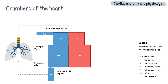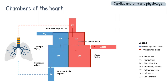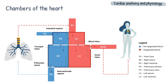Once the blood becomes oxygenated, the left atrium receives it from the lungs via the pulmonary veins. It pumps the blood across the mitral valve into the left ventricle, which delivers blood to the rest of the body via the aorta across the aortic valve, and the cycle repeats. This forms the circulatory system of the body.